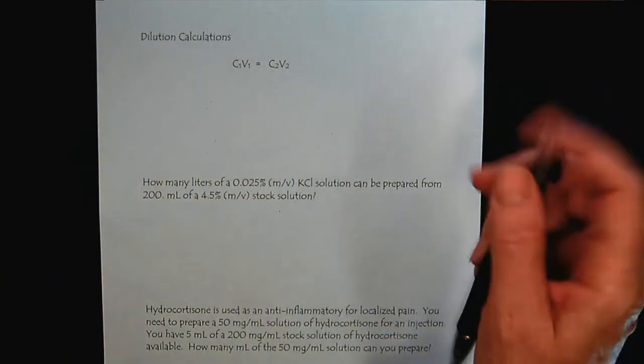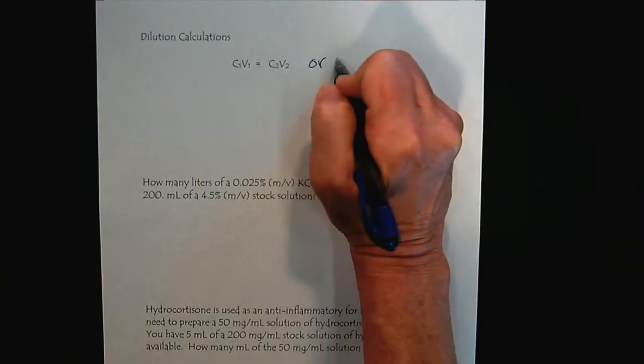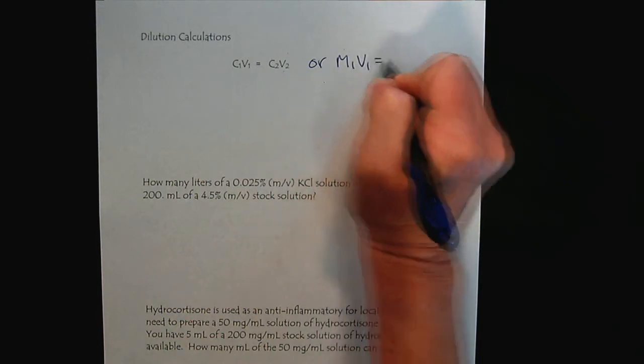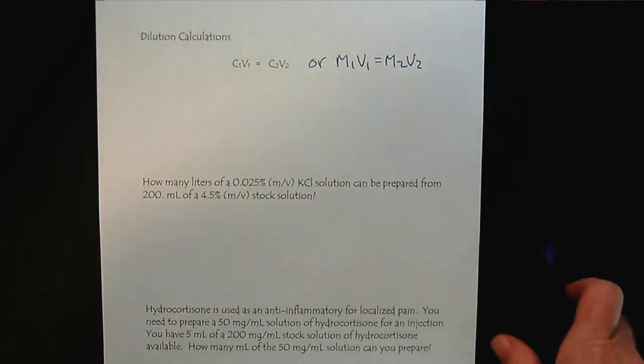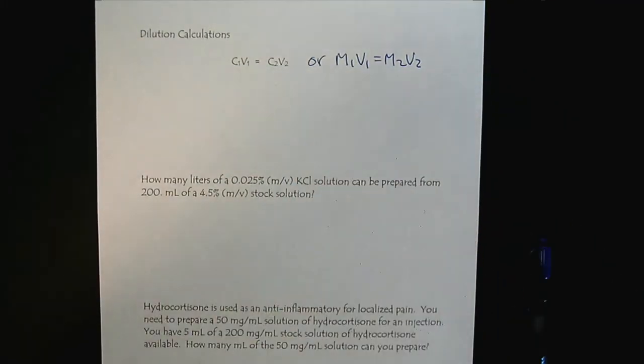Some textbooks will describe it as M1V1 equals M2V2. Using M is for molarity, and that's something chemists love, but this calculation works for all different types of concentration units, so I prefer the more global C1V1 equals C2V2.